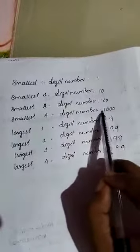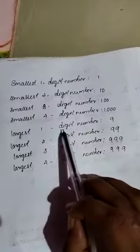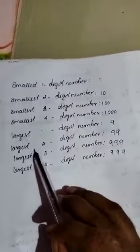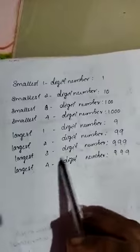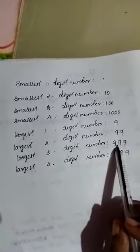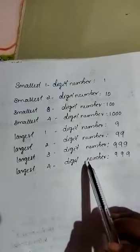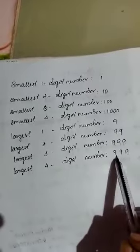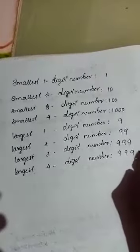Smallest four digit number is 1000. Then the largest one digit number is 9, largest two digit number is 99, largest three digit number is 999, largest four digit number is 9999.